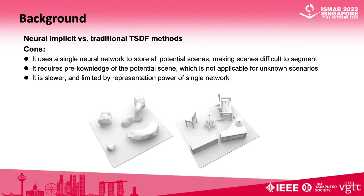However, the neural implicit surface still has some problems that affect its practicality. 1. It uses a single neural network to store all potential scenes, making the scene difficult to segment. 2. It requires prior knowledge of potential scenes, not applicable to unknown scenarios. 3. The speed is slow, limited by the network representation ability.